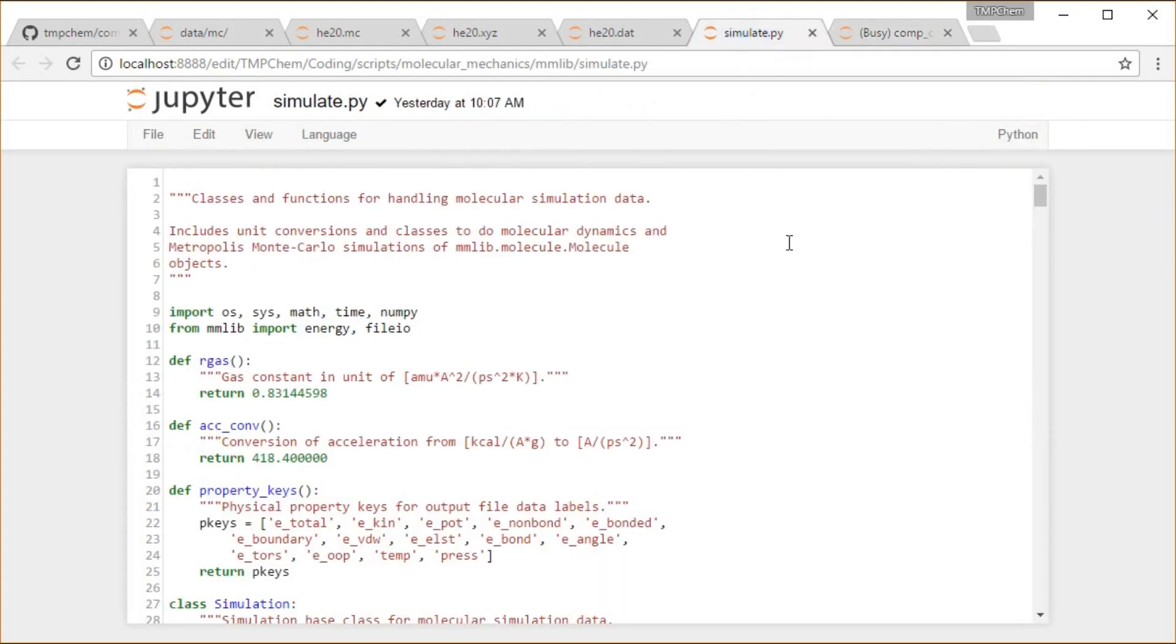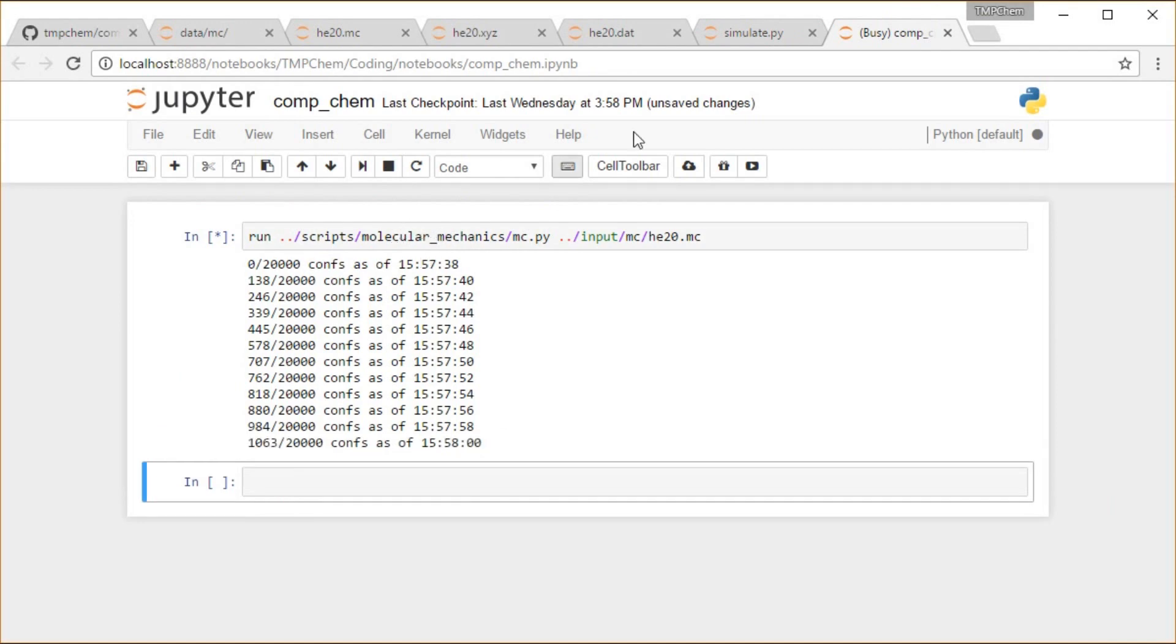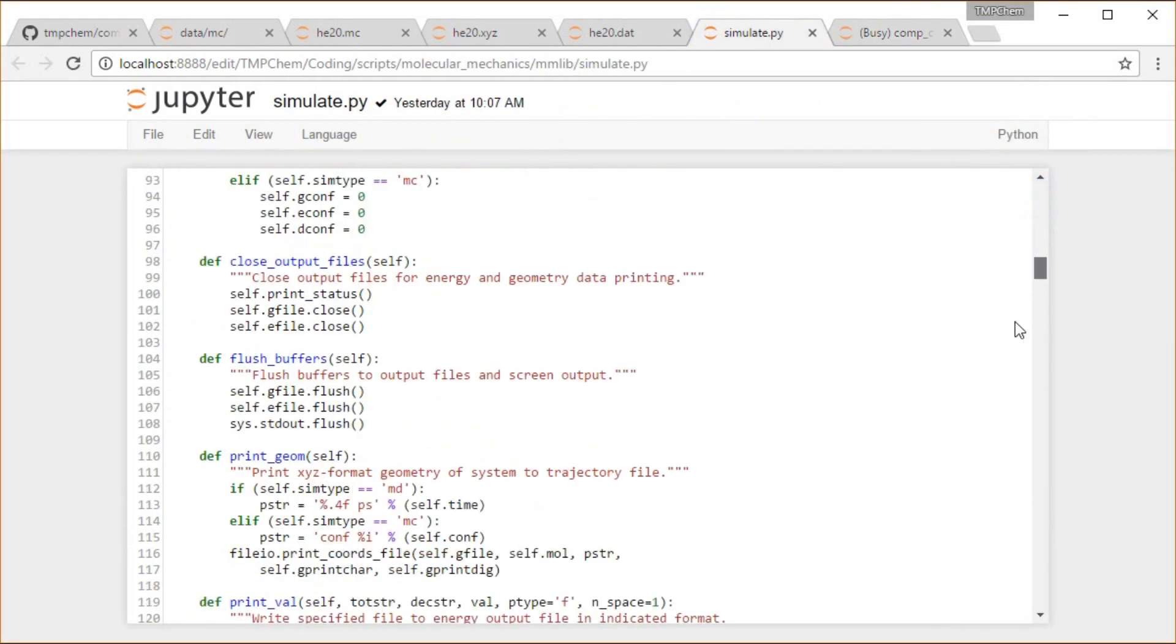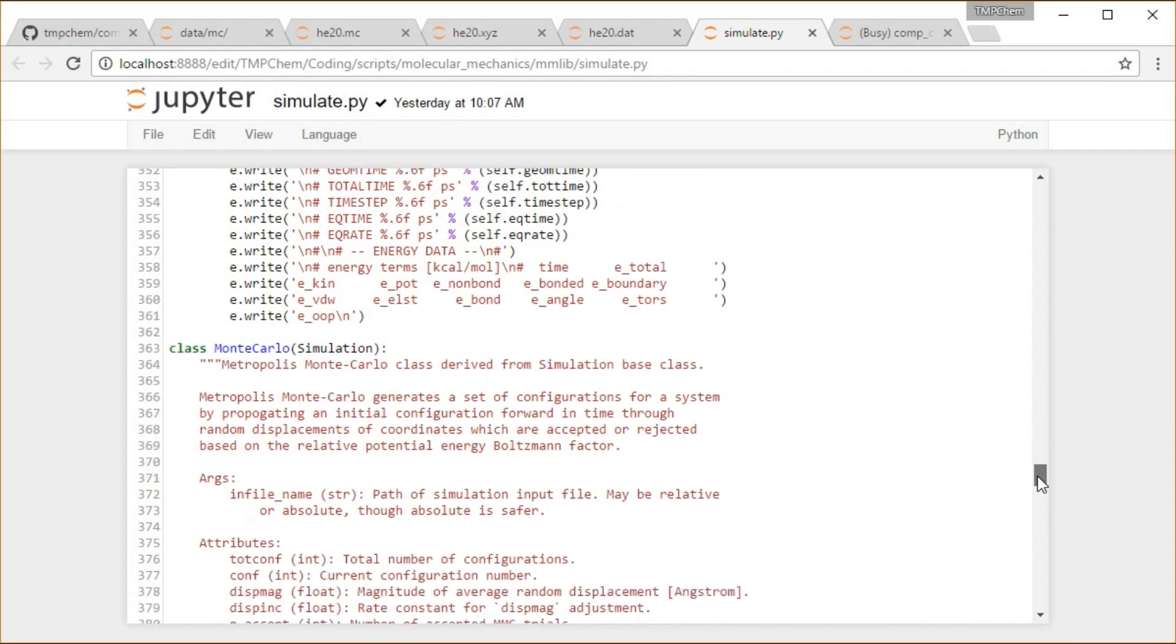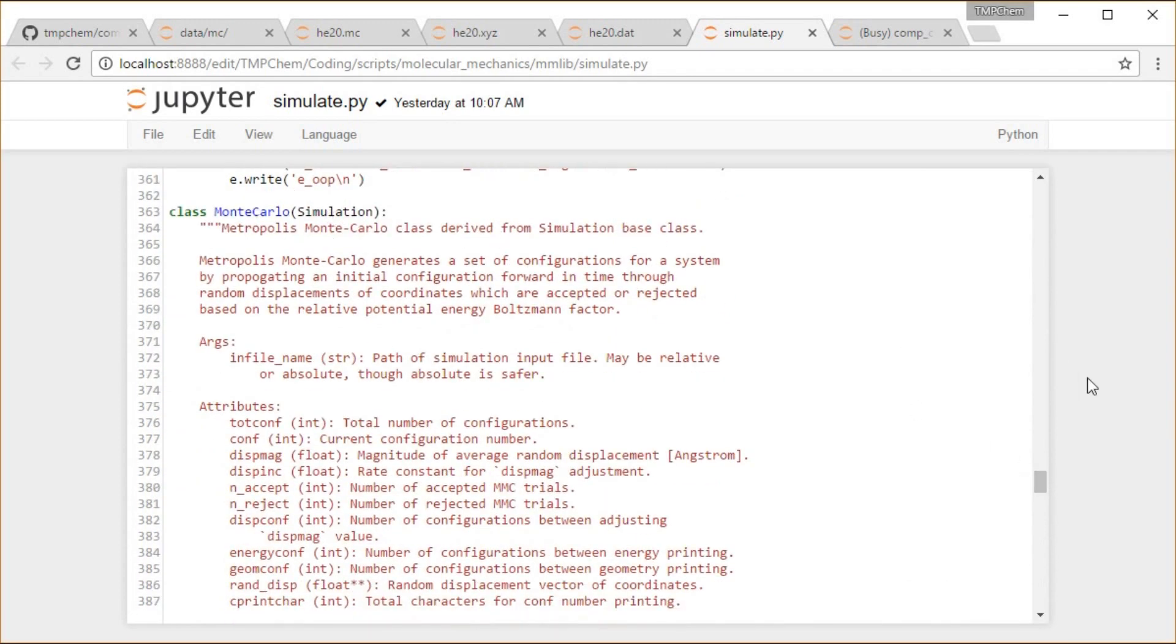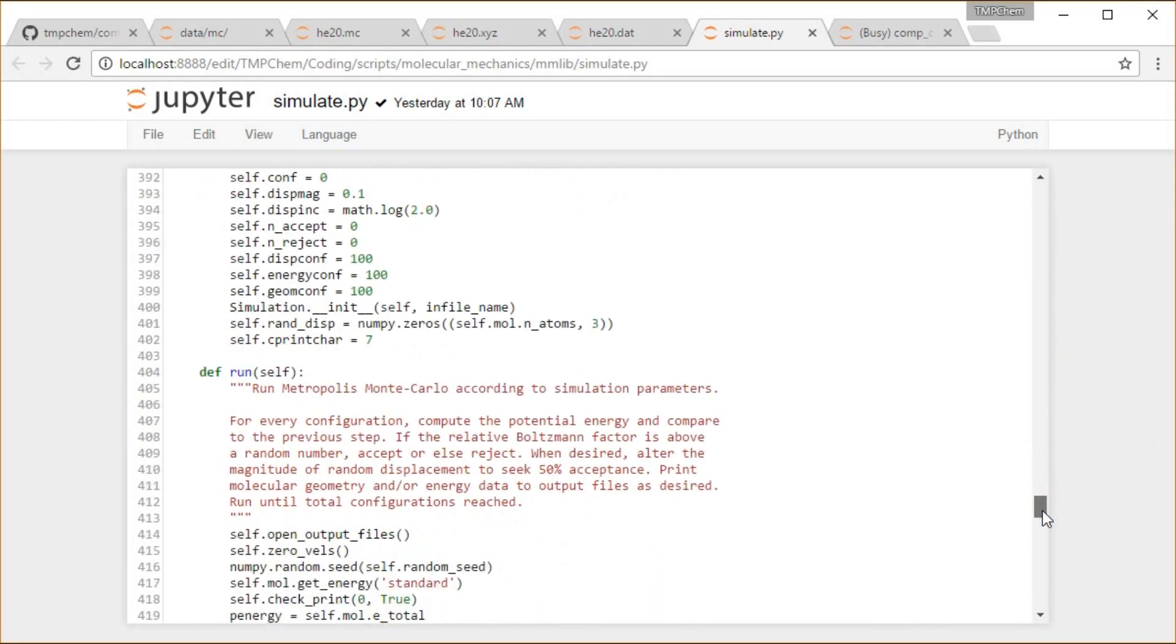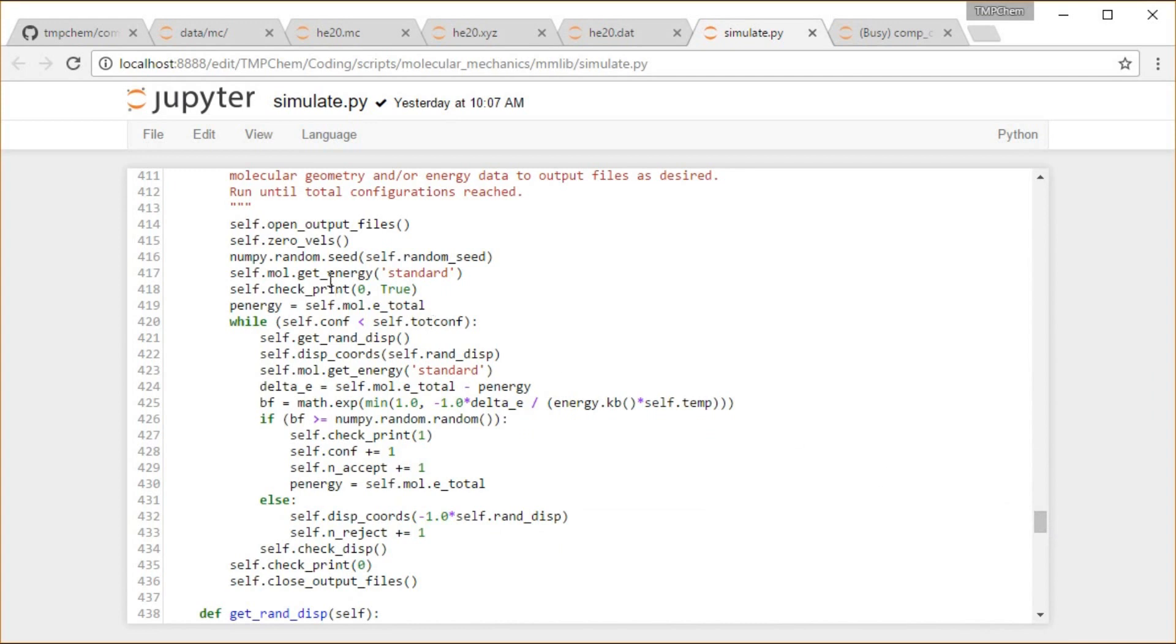The meat of what's going on is in this simulate.py module, in the mmlib directory below the molecular mechanics structure. There is a Monte Carlo class and the meat of what's going on is in this run function. For all of these iterations, we randomly displace the coordinates, get the new energy, compare the delta E, do the Boltzmann factor, see if it's bigger than a random number, and then accept or reject it based off those, and then continue outputting things as we go.